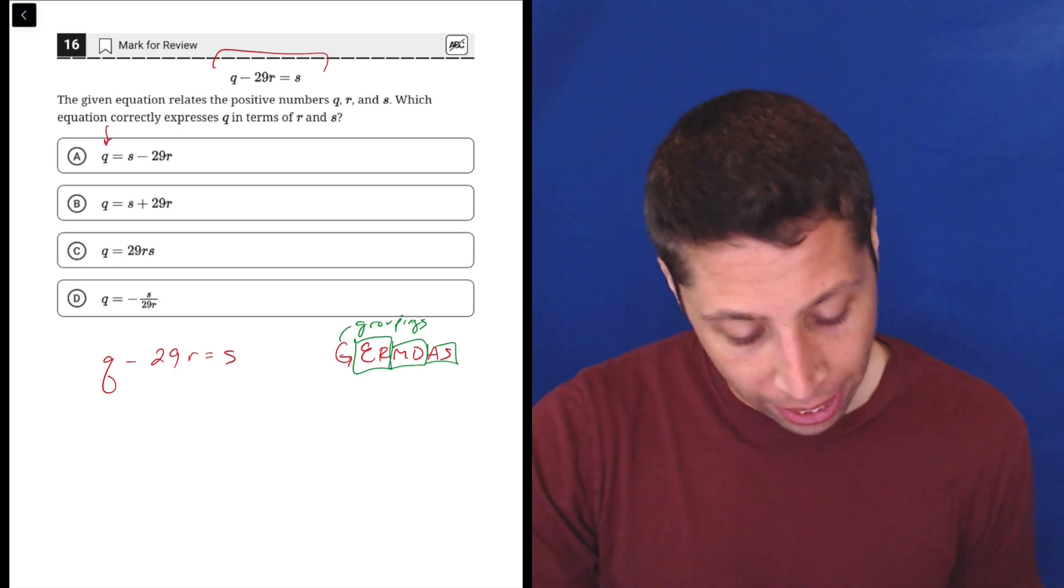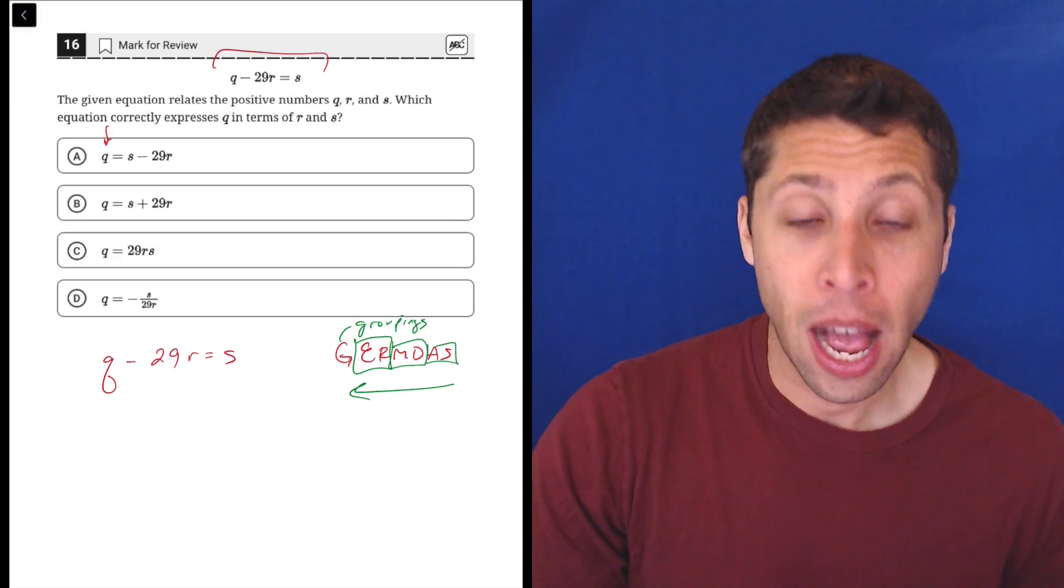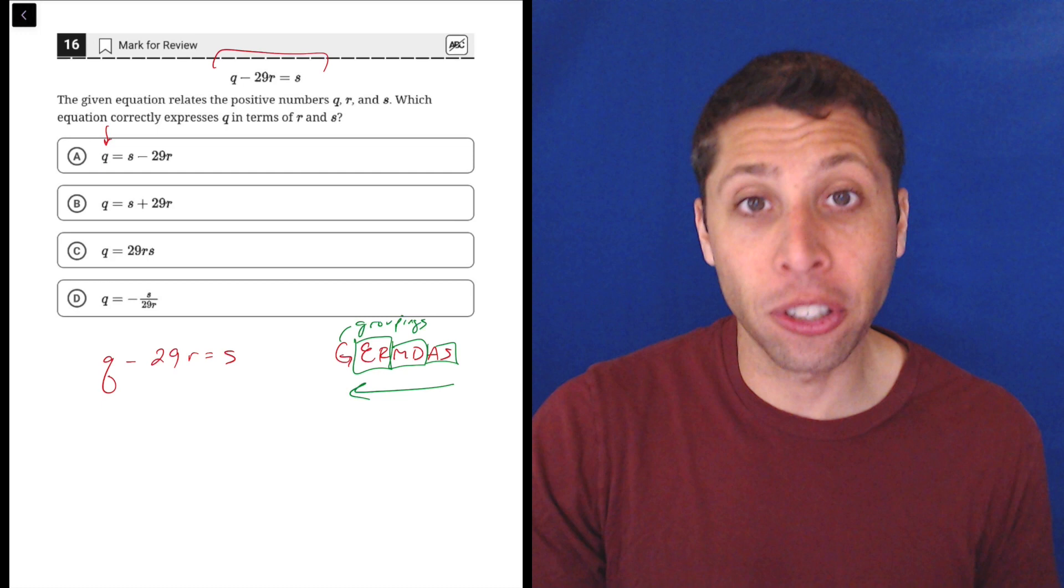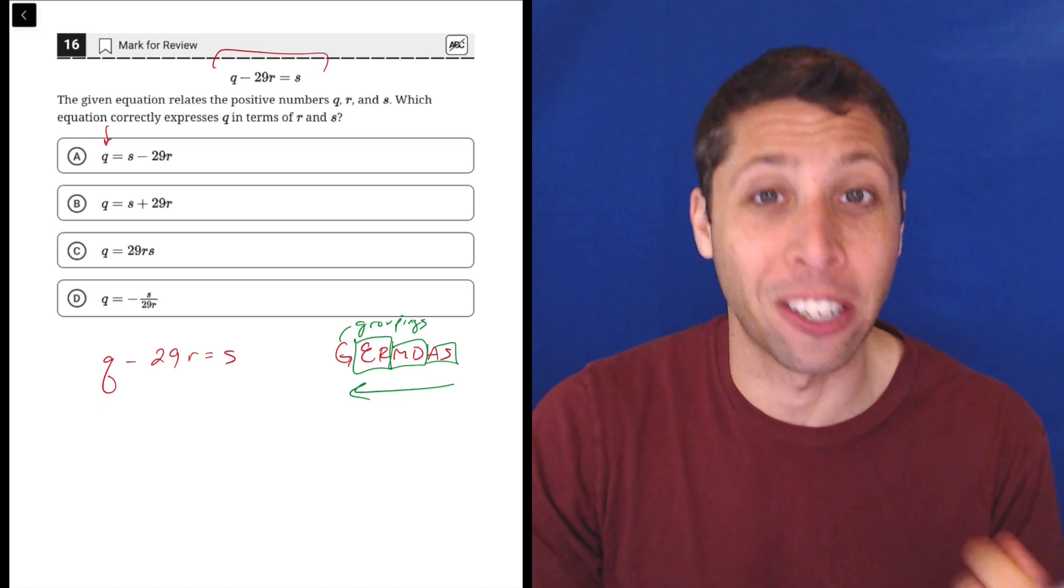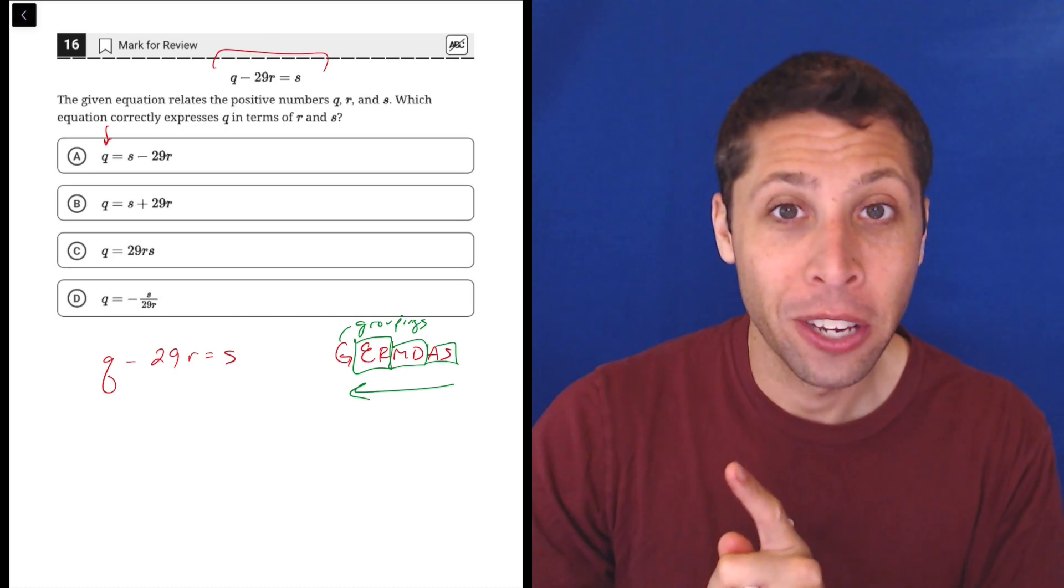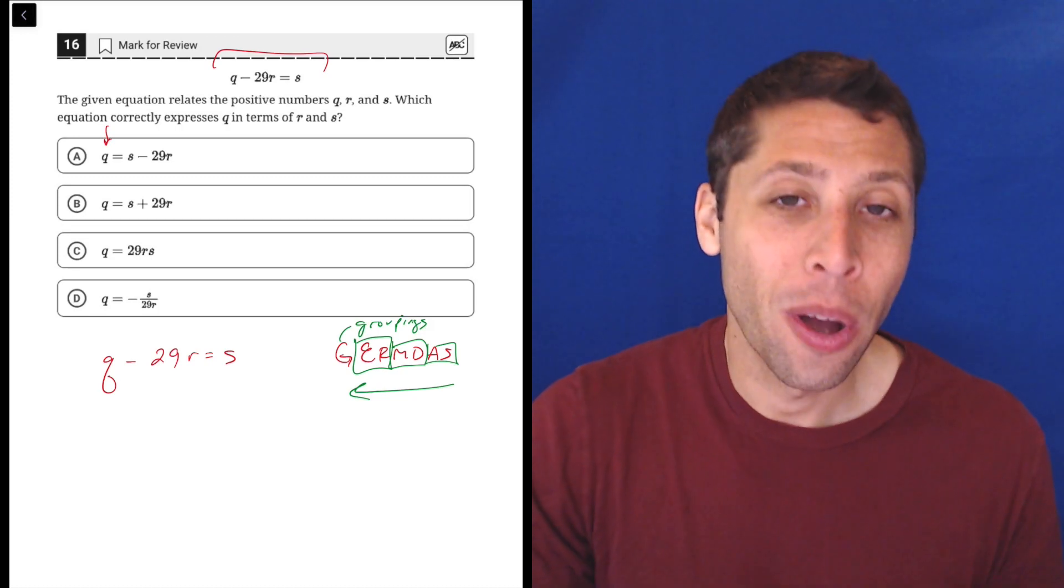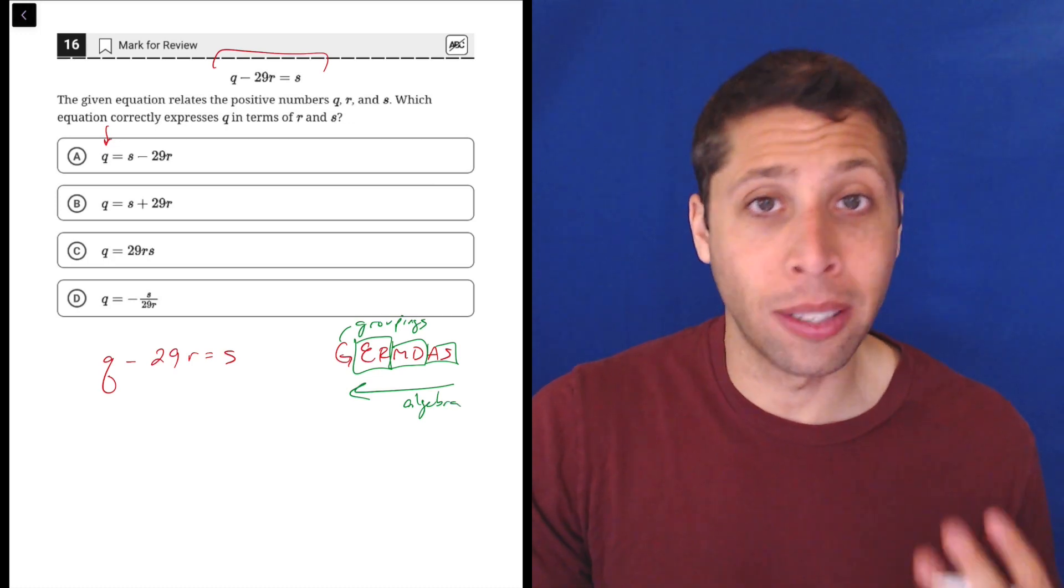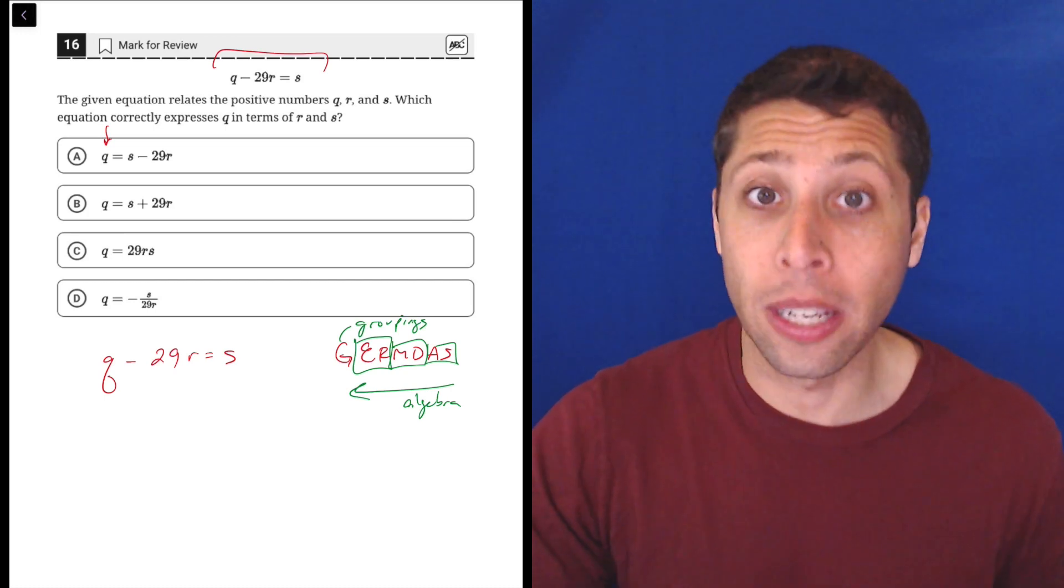In this case, I'm thinking okay I got to go backwards through GermDAS because I'm doing algebra. I want to get Q alone. So GermDAS is my order of operations for basic arithmetic. We start with groupings, then we go to exponents and radicals, then multiplication and division, then addition and subtraction. But algebra is arithmetic in reverse because we want to move things away. We can't just simplify as easily, so we have to go backwards. Now in this case it's not going to matter because there's really only one step we need to perform. But I think this is good to set you up for future questions where it is a little bit more complicated.